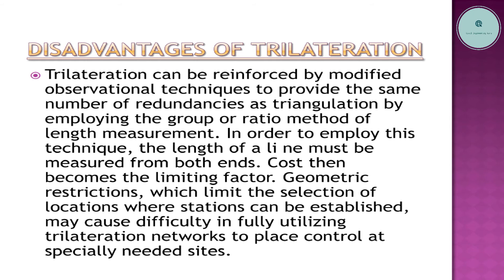Trilateration can be reinforced by modified observational techniques to provide the same number of redundancies as triangulation, by employing the group or ratio method of length measurement. To employ this technique, the length of a line must be measured from both ends, and cost then becomes a limiting factor. Geometric restrictions which limit the selection of locations where stations can be established may also cause difficulty in fully utilizing trilateration networks to place control at specially needed sites.